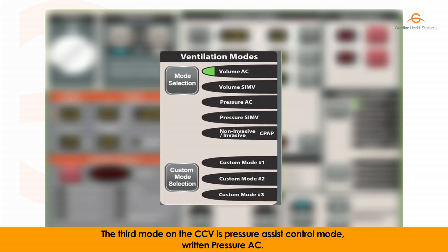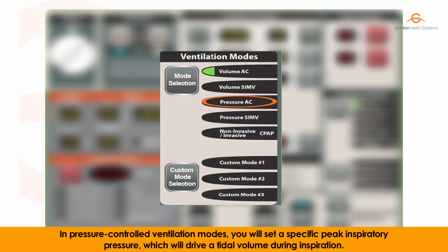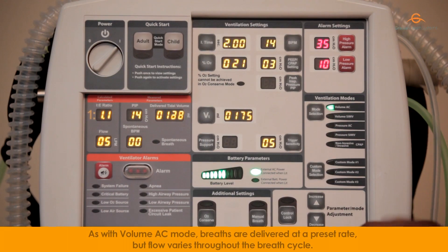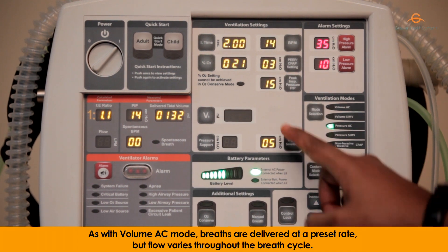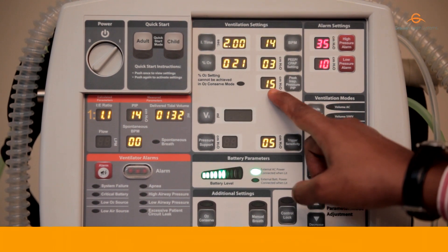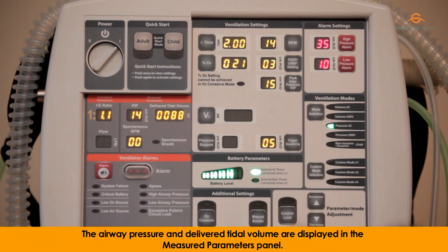The third mode on the CCV is pressure assist control mode, written pressure AC. In pressure controlled ventilation modes, you will set a specific peak inspiratory pressure, which will drive a tidal volume during inspiration. As with volume AC mode, breaths are delivered at a preset rate, but flow varies throughout the breath cycle. The airway pressure and delivered tidal volume are displayed in the measured parameters panel.